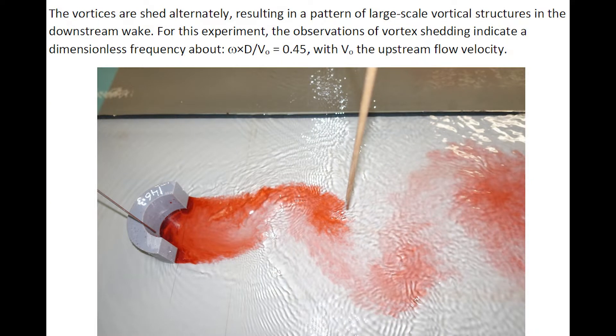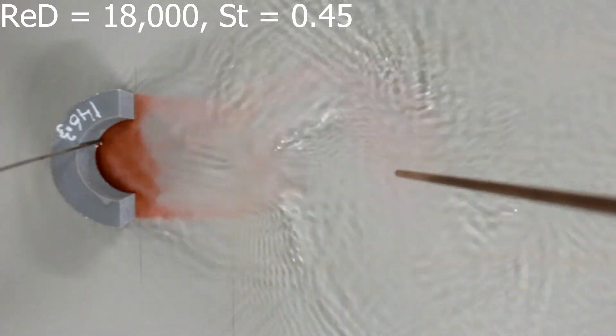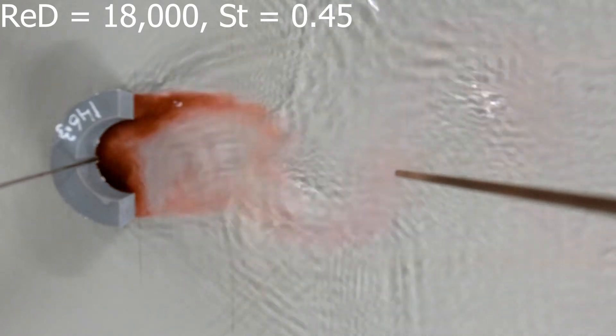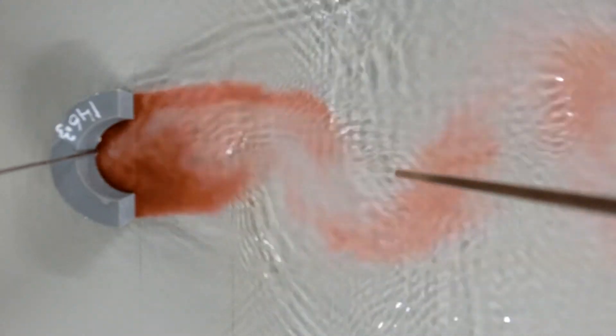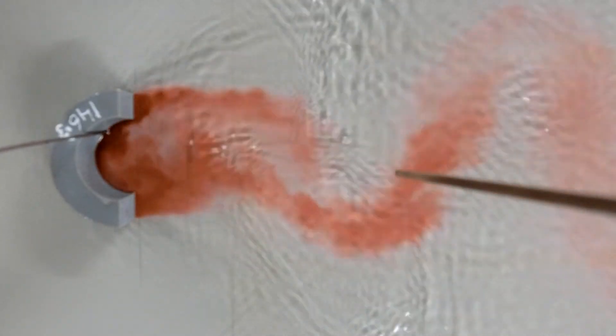For this experiment, the observations of vortex shedding indicate a dimensionless frequency or Strouhal number equal to 0.45. This movie illustrates a well-organized von Karman street of vortices behind the C-shaped cylinder in shallow free surface flow, for which the Reynolds number is 18,000.